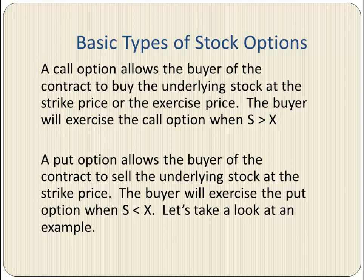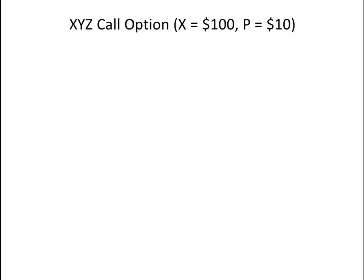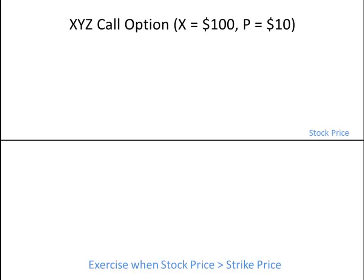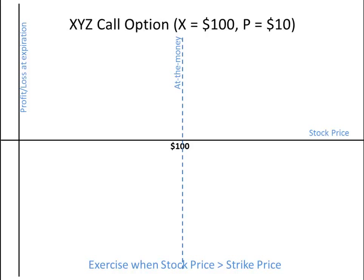Let's take a look at an example of a call option and a put option. We have a call option on stock of XYZ company, where the strike price is $100 and the premium is $10. The buyer will exercise the option when the stock price goes above the strike price. We are going to plot the stock price along the X-axis and profit or loss at expiration along the Y-axis. At $100, the stock price and the strike price are the same, so this option is called at the money and the buyer is not going to exercise the option.